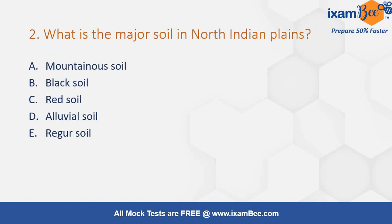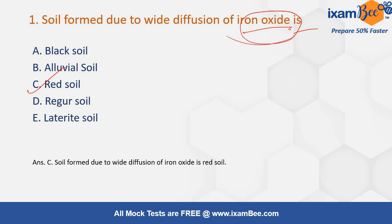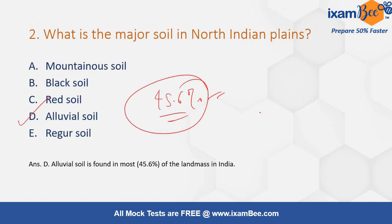Next question: what is the major soil in the north Indian plains — mountainous soil, black soil, red soil, alluvial soil, or Regur soil? The major soil in the north Indian plain is alluvial soil, which covers about 45.6 percent of the total land mass. Red soil covers approximately 10.6 percent and is also known as early soil.